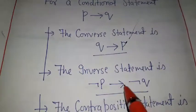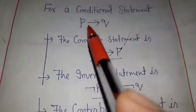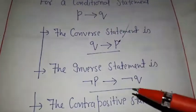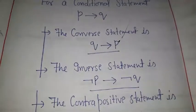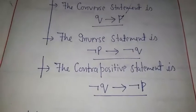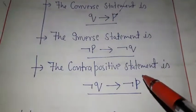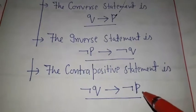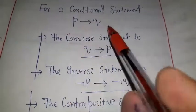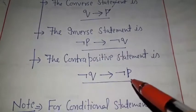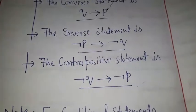The inverse of P implies Q is 'if not P then not Q', denoted by not P implies not Q. The third one is the contrapositive statement. For P implies Q, its contrapositive is not Q implies not P — that is, we interchange the propositions and negate them. So the contrapositive of P implies Q is not Q implies not P.